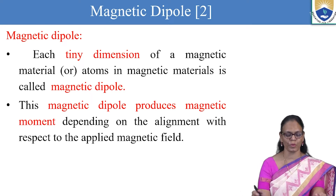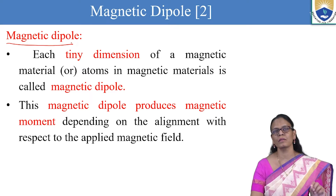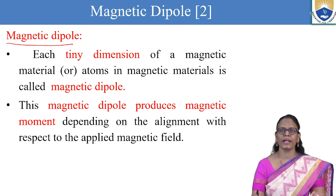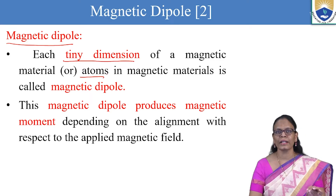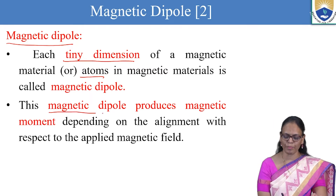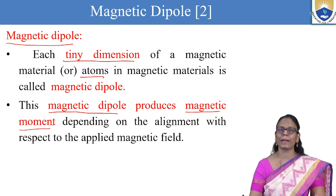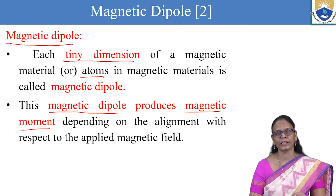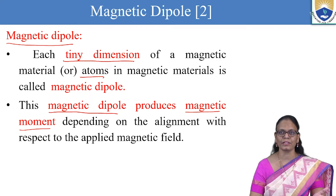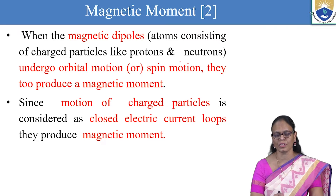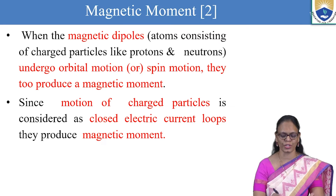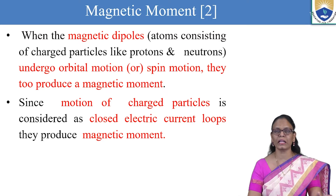Now comes the magnetic dipole. Each tiny dimension of a magnetic material — an atom — is called a magnetic dipole. These magnetic dipoles produce magnetic moment depending upon their alignment with respect to the applied magnetic field. When the magnetic dipoles, consisting of charged particles like protons and electrons, undergo orbital motion or spin motion, they produce magnetic moment.